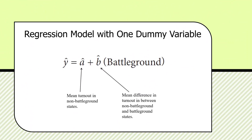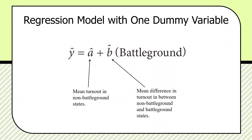Here's what the regression model with a dummy variable looks like. Alpha (a-hat) is going to be the mean turnout in non-battleground states. When battleground assumes a value of zero, b-hat times battleground drops out, and you're left with y-hat equal to a-hat — the mean turnout in non-battleground states. So in dummy variable regressions, the intercept always has a lot of meaning because it captures the value for what's called the omitted or excluded category — here, non-battleground states.